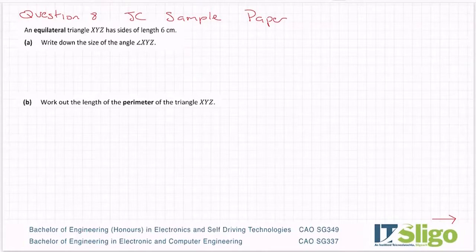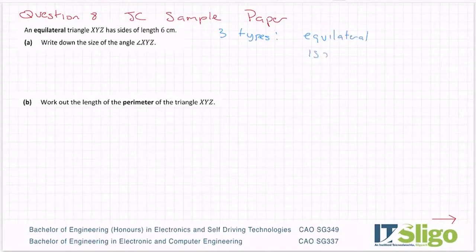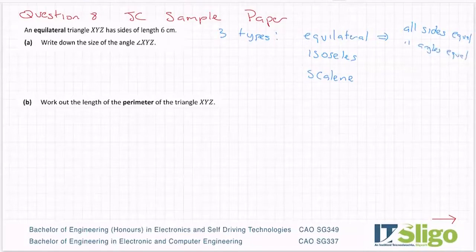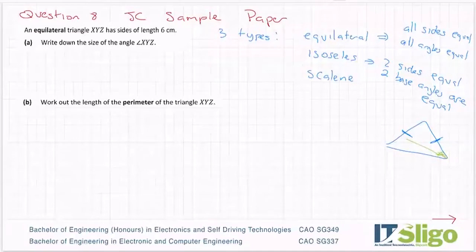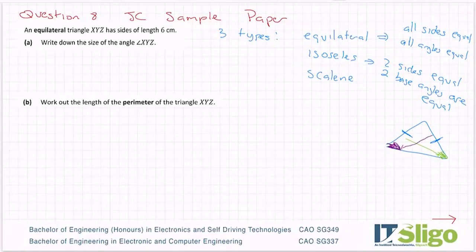Okay, three types of triangles. You have an equilateral, an isosceles, and a scalene. Equilateral: all sides equal, all angles equal. Isosceles: two sides equal, the third is different, and two base angles are equal. Sometimes people make mistakes as to which of the two angles are equal — it will be the angles opposite the sides that are equal. So if this side is equal to this side, then the angle across from each of those sides are the two angles that end up being equal in your isosceles triangle.